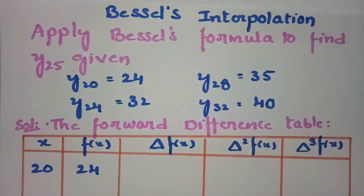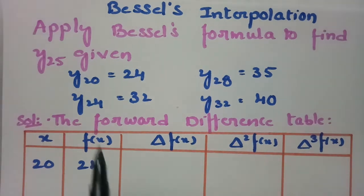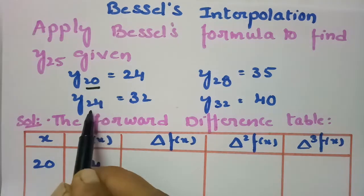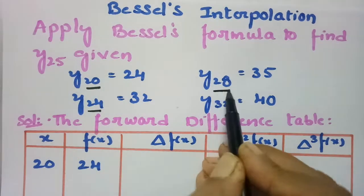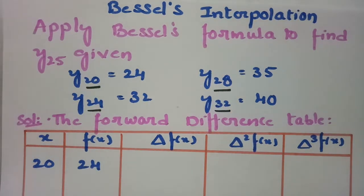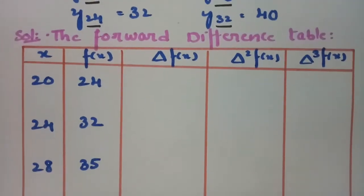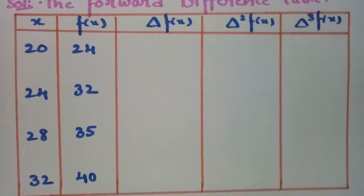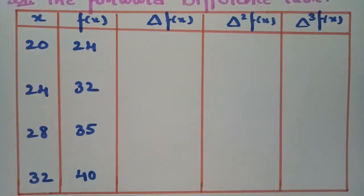Before using Bessel's formula we have to frame the forward difference table. The x values are 20, 24, 28, and 32. These are the x values and these are the corresponding y values.